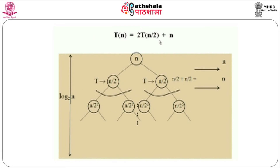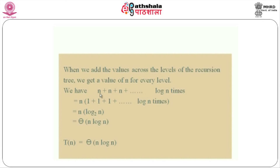For example, with T(n) = 2·T(n/2) + n, dividing into two problems of size n/2, then each n/2 is divided into two subproblems of size n/4. This is a binary tree with log₂(n) levels. At every level the cost is n — n/2 + n/2 = n at each level. Summing over all levels: n × log(n) total. Therefore, the complexity of this is θ(n log n), which is the solution of the recurrence equation of merge sort.